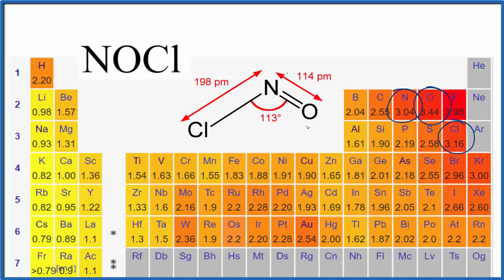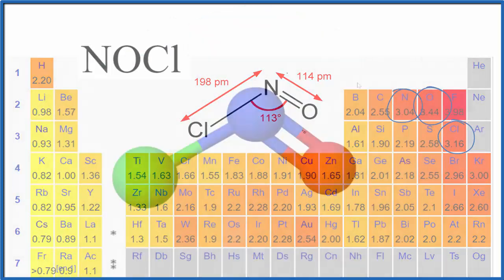Because of that, we have a polar molecule. Let's take a look at this in three dimensions though. The nitrogen is in the center, the green is the chlorine, and we have our double bonded oxygen here.